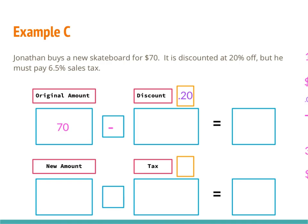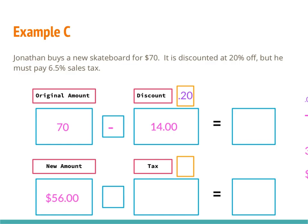The discount is 20%, or 0.20 as a decimal. I multiply $70 times 0.20 and get $14. Then $70 minus $14 gives me $56. I want to make sure I pay tax only on the amount I'm actually spending — $56, not $70. So the first step is finding the discounted price of $56 before calculating tax.